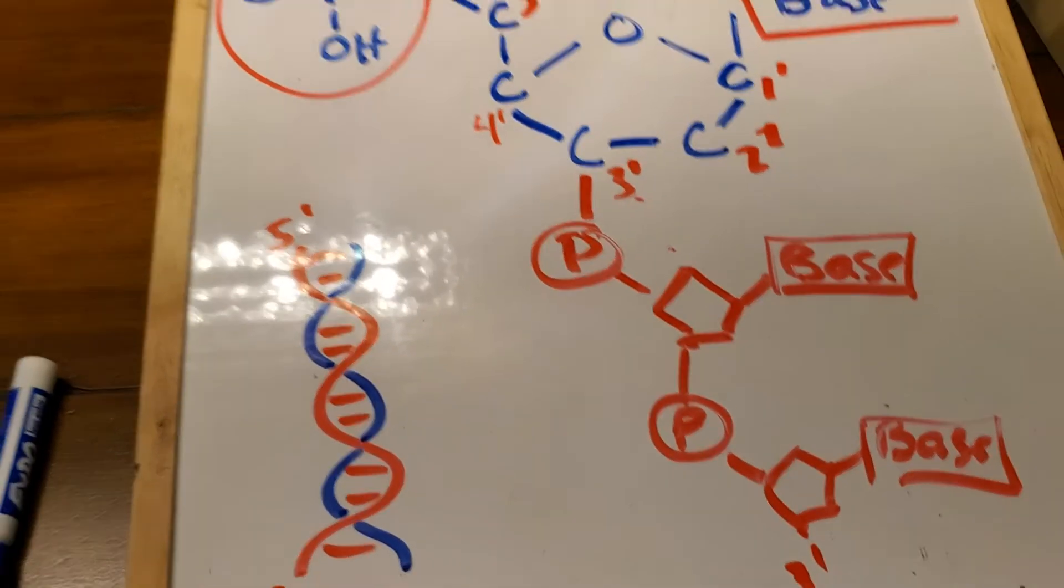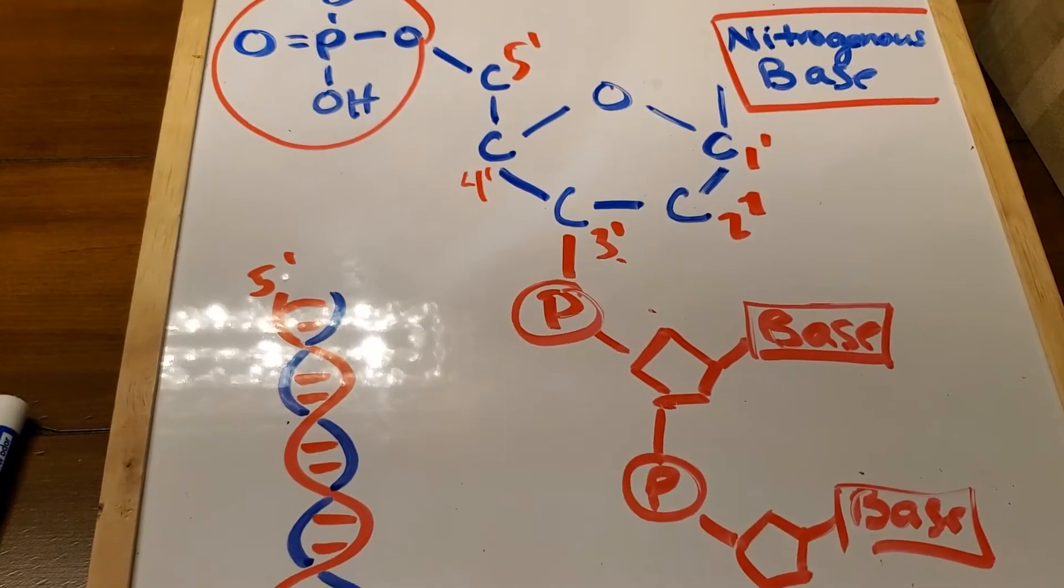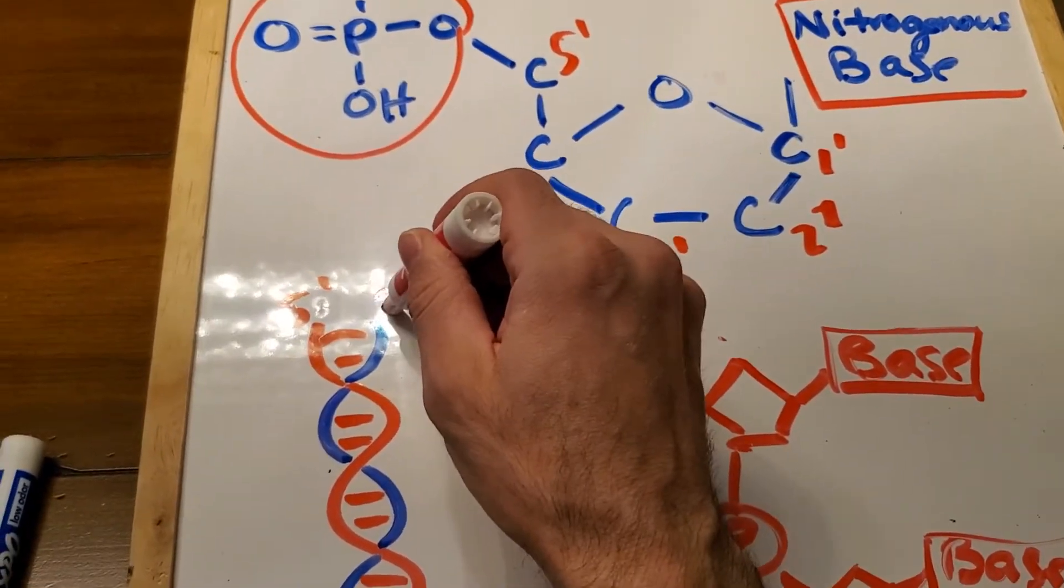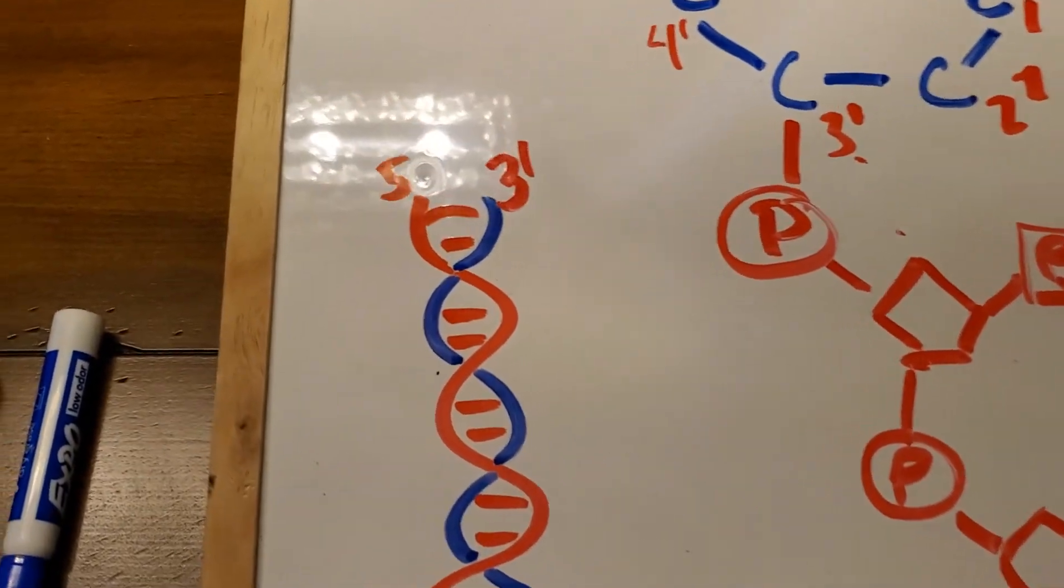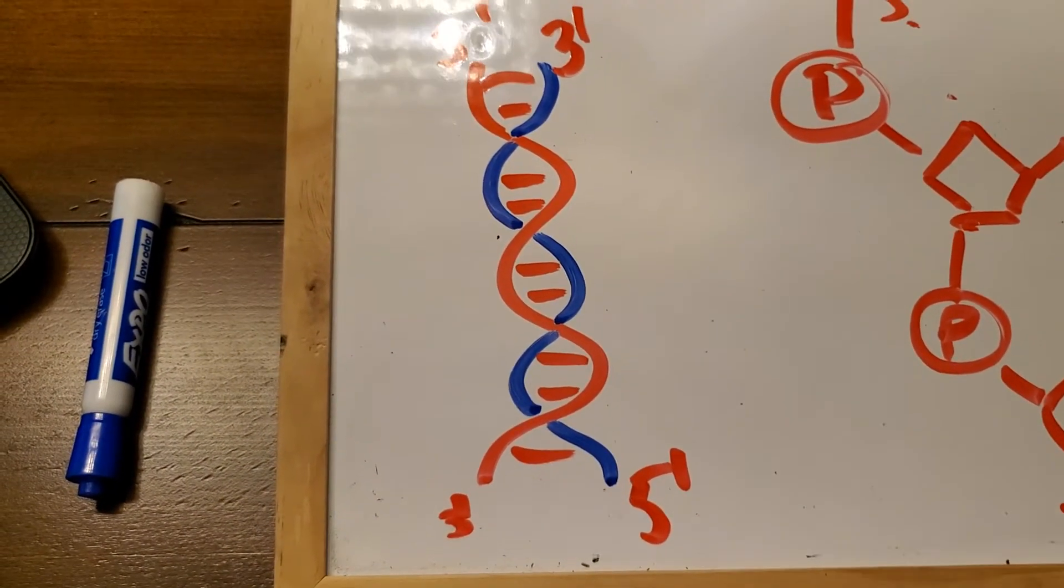So the thing with DNA is it's anti-parallel, meaning that the strands are going to be opposite each other. So this one here, that's going to be a 3 prime, and this is going to be 5 prime. It's always going to be like that.